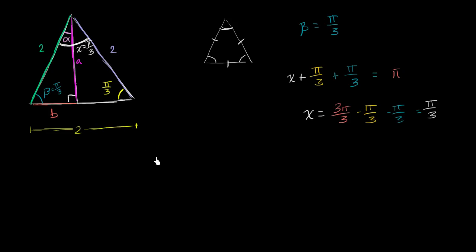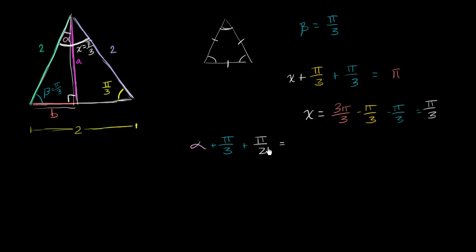Now what else can we figure out? We know this angle is pi over three, beta is pi over three, and there's a right angle which is pi over two. Knowing two angles of a triangle, we can find alpha: alpha plus pi over three plus pi over two equals pi, the sum of the interior angles of that smaller triangle.